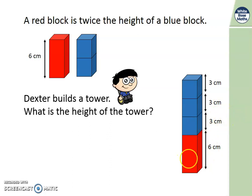So we need to do 6 centimetres, add 3 centimetres, add 3 centimetres, add 3 centimetres. Let's record that. And then we add them up. And we get 15 centimetres altogether. So the height of the tower is 15 centimetres.